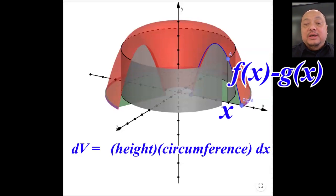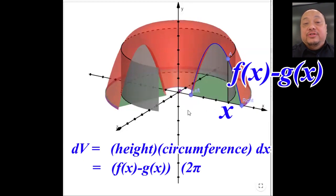Therefore the tiny volume is dv equals height times circumference times dx. Height is f(x) minus g(x). Circumference of a circle is 2πr. What is the radius? Let me open the shell out some more so you can see. The center of the circle is here at 0. The circle is located here at x. Therefore the radius is x minus 0 equals x. The tiny volume is dv equals (f(x) minus g(x)) times 2πx times dx.